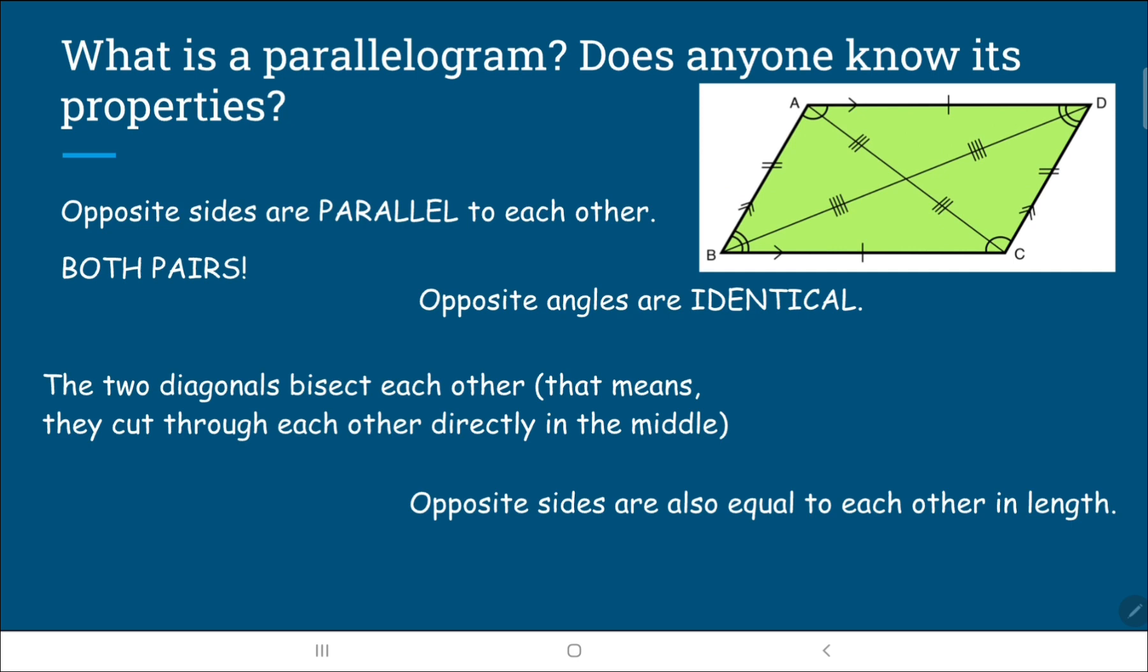Well, the alternative to a parallelogram is a shape called a trapezium, which looks like this. And a trapezium is different because only one pair is parallel to each other. Opposite angles are not identical. And in addition to that, the length of this parallel pair is also not the same. So that's why a parallelogram is different from a trapezium. Both sides are parallel and both sides are equal to each other in length. Opposite angles are identical and they have two diagonals and they bisect each other.